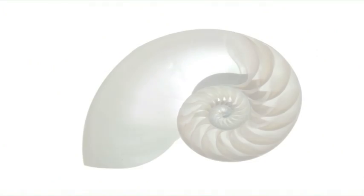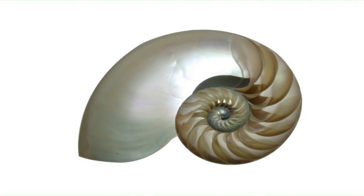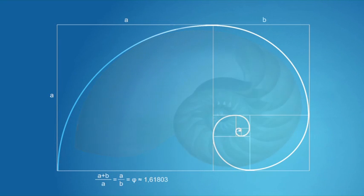There is the Fibonacci series in nature. The structure of a shell of an oyster is an expression of the Fibonacci series.